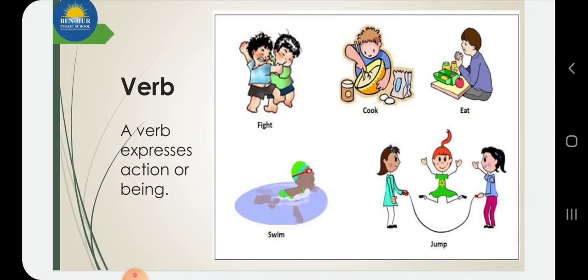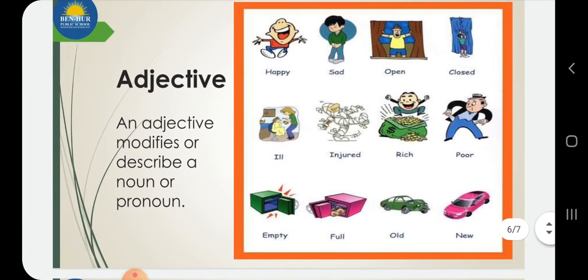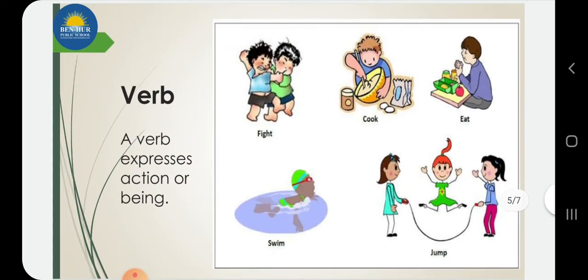Verb — verb expresses action or being. When we come to know what action is happening in a sentence, like dancing, reading, eating, playing, singing, walking, sleeping — these are verbs. Also: fight, cook, eat, swim, jump — these are your verbs.